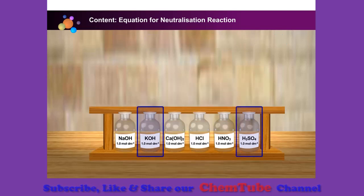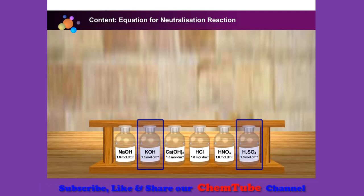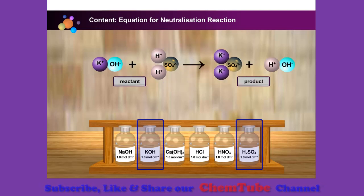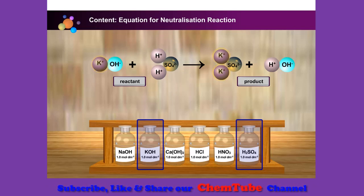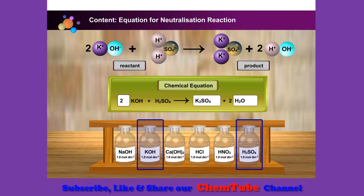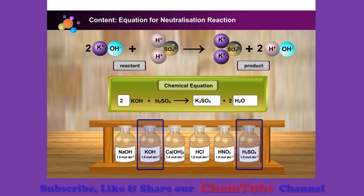Sulfuric acid and potassium hydroxide solution. For the product, observe the animation. Next is to balance the equation. From the equation, we know that two moles of potassium hydroxide solution react with one mole of sulfuric acid to produce one mole of potassium sulfate — a salt — and two moles of water.